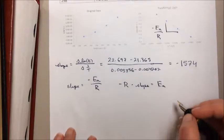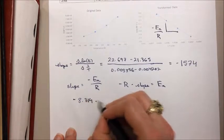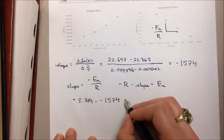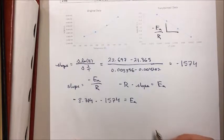All I have to do is plug in the numbers that I know. 8.314 times negative times negative 1574 equals Ea. Let me crunch that down.